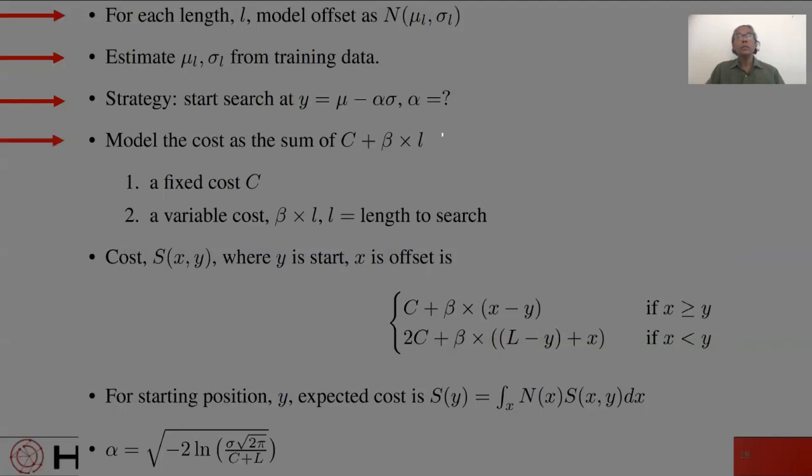To do so, let us model the cost of the search as a fixed cost, c, plus a variable cost, which is proportional to the length of the string that has to be scanned. So the cost is c plus beta times l for some constant beta. We estimate c and beta by performing a number of searches and fitting a straight line to the observed costs.